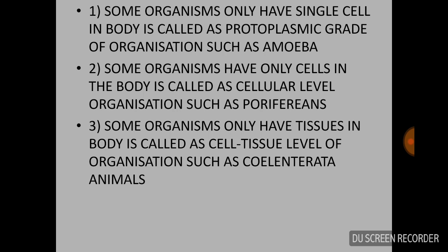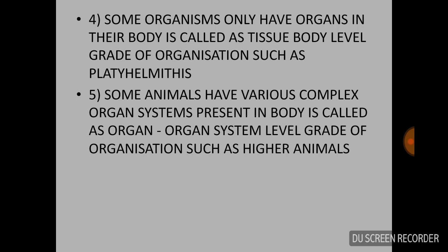Such as Porifera. Third level: some organisms only have tissues in their body. This is called cell-tissue level of organization, such as Cnidarians. Fourth level: some organisms only have organs in their body with no organ systems. This is called tissue-organ level of organization, such as Platyhelminthes.